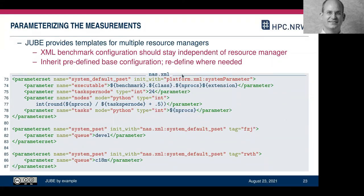You set variables like 'tasks_per_node', 'nodes' (as integer types computed via Python expressions), and queue parameters. I create a 'default_pset' initialized with values from platform.xml, then overwrite what's system-specific — for example, the queue is 'c18m' in Aachen and 'devel' in Jülich. You only need to override what diverges from the sensible defaults in platform.xml, not everything explicitly.